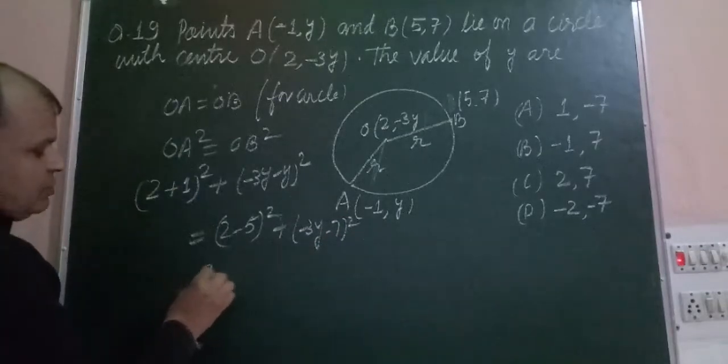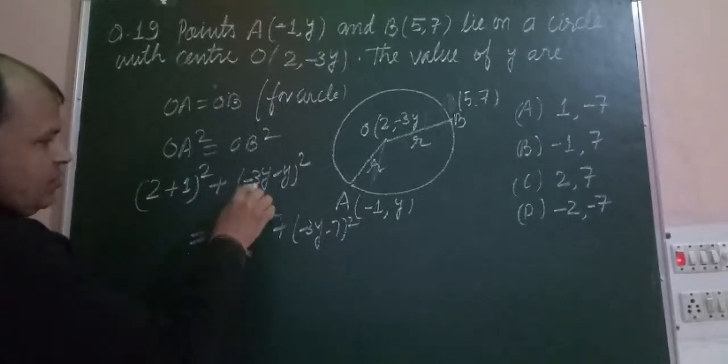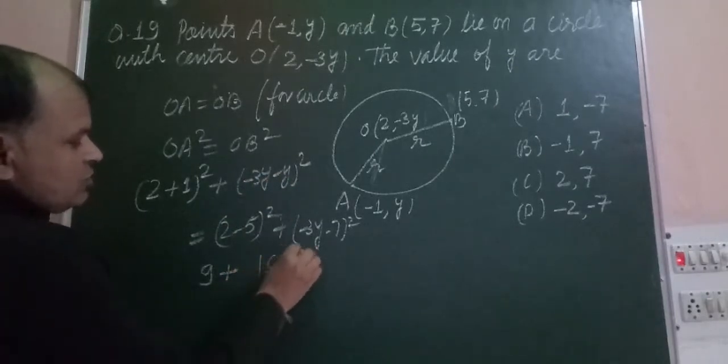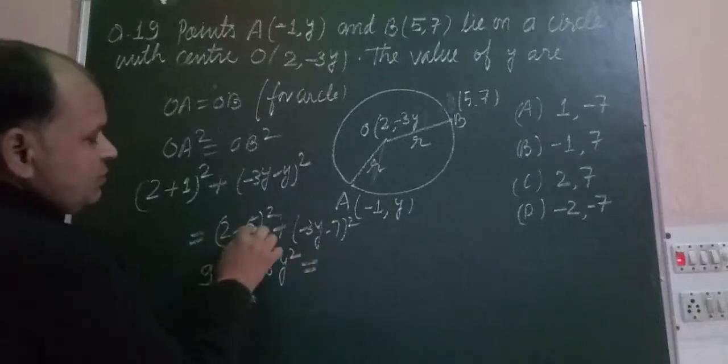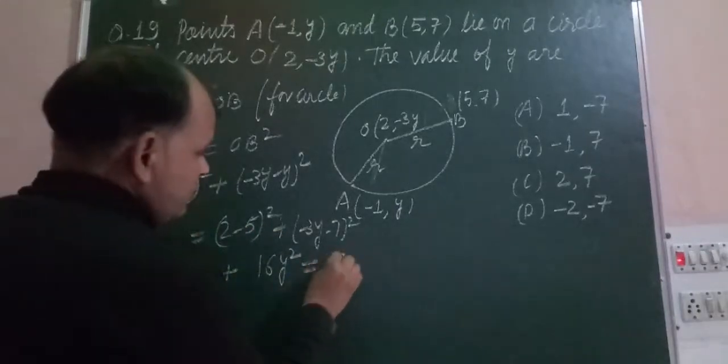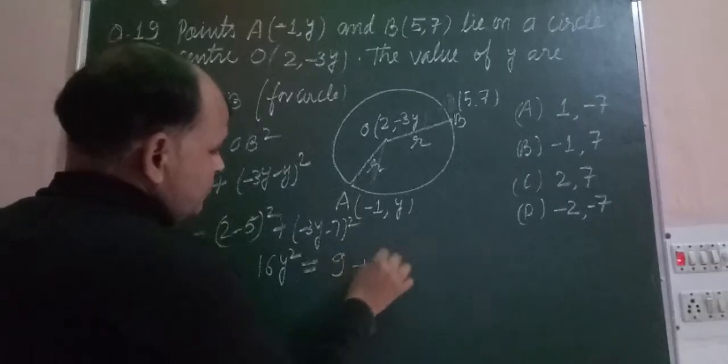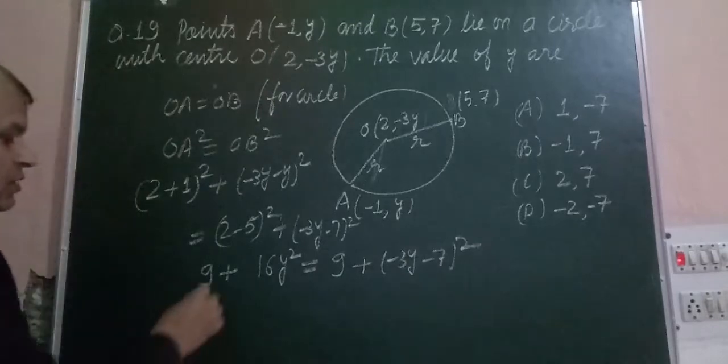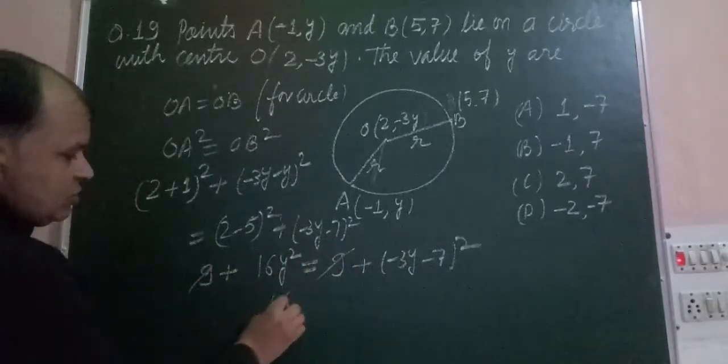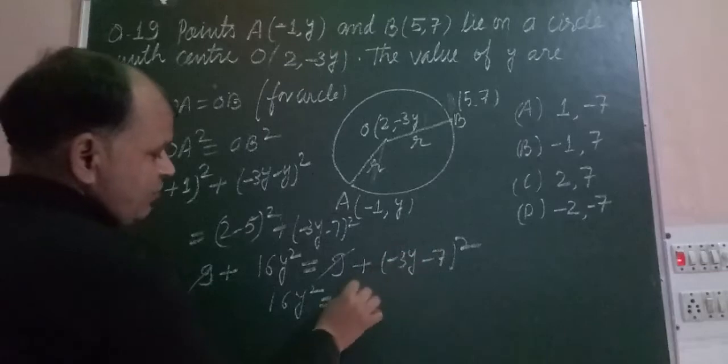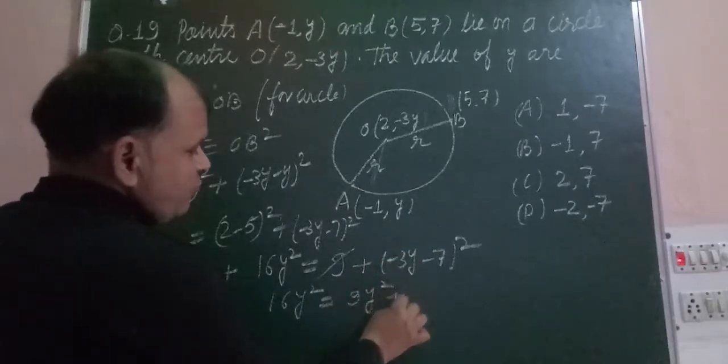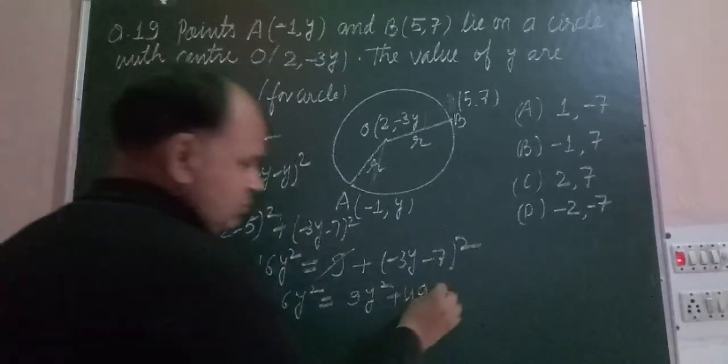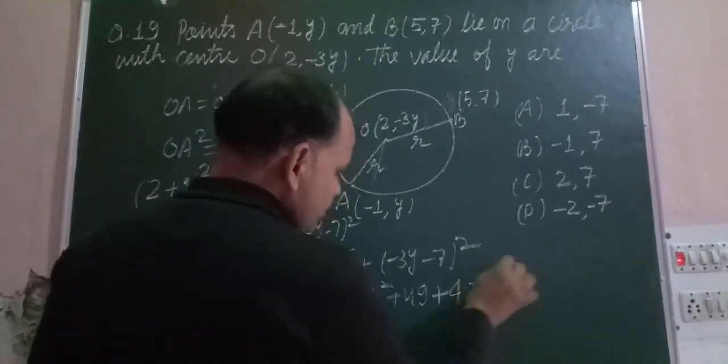And this is (-3 - Y)² which gives us 9 + Y² + 6Y. For OB: (2 - 5) is -3, so (-3)² equals 9, and (-3 - 7) is -10, so (-10)² equals 100. So we have 9 + 9 + Y² + 6Y equals 9 + 100, which gives 18 + Y² + 6Y equals 109.